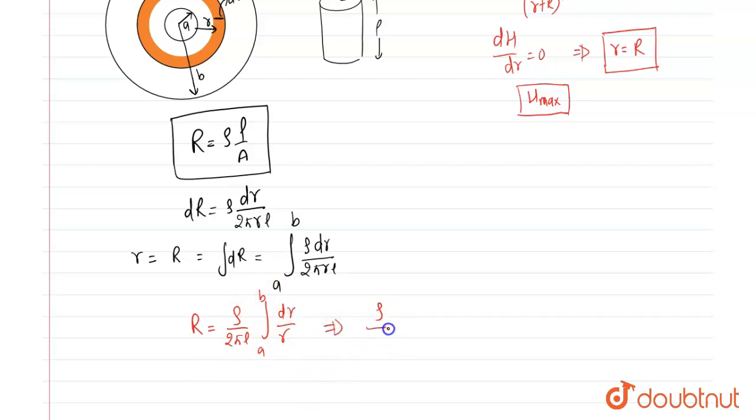So that relation gives us rho upon 2 pi L, integration of 1 upon R is equal to ln R limit A to B. So the relation of R is equal to rho upon 2 pi L ln B upon A. So that is our value of resistance.